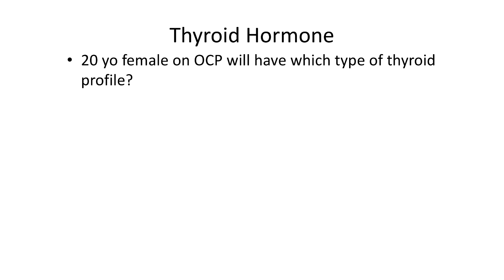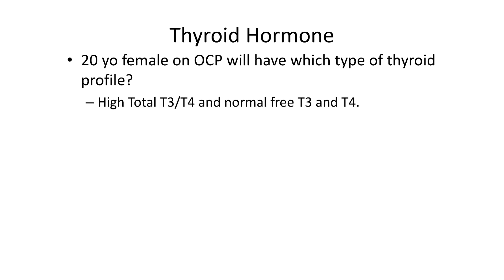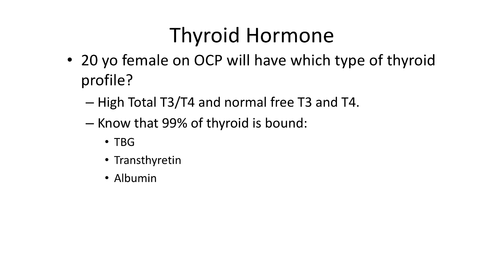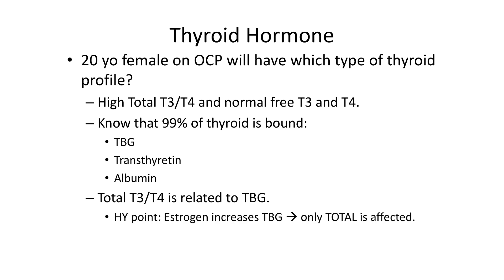Consider a 20-year-old female on oral contraceptive pills. She would have high total T3 and T4 with a normal free fraction of thyroid hormone. Remember that 99% of thyroid hormone is bound to thyroid-binding globulin, transthyretin, and albumin. Estrogen — from pregnancy or OCPs — tells the liver to make more thyroid-binding globulin, raising total T4 and T3 while the free fraction remains normal.